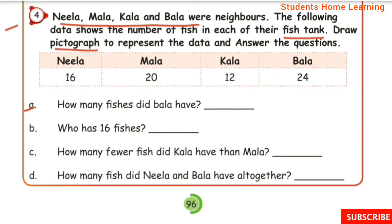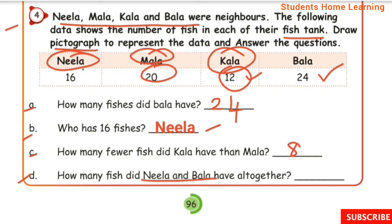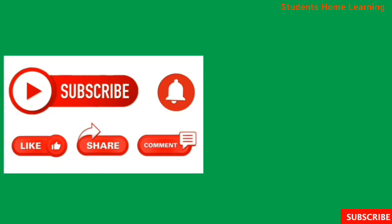Questions: How many fishes did Bala have? Answer: 24. Who has 16 fishes? Answer: Neela. For other units exercises and term Maths videos, click on the description link. If you like this video, please share it and subscribe to our channel. Thanks for subscribing.